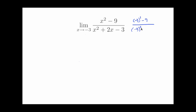This on top and negative 3 squared plus 2 times negative 3 minus 3. Now if I evaluate this out I get 0 on the top, 9 minus 9, and on the bottom I get 9 minus 6 minus 3, that's also 0. So what does that mean about my limit?